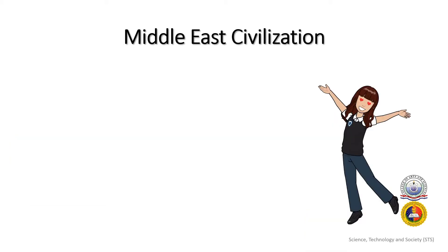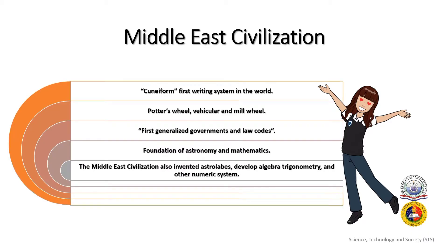The Arabic contribution to science is monumentally significant. Arab scientists, writing in Arabic, made groundbreaking breakthroughs which broadened mankind's comprehension of the natural world. Cuneiform is the first writing system in the world. The potter's wheel was invented in Mesopotamia, also the vehicular wheel. The first governments and law codes created major changes to countries all over the world. Arabic scientific inquiry flourished into major discoveries in the fields of mathematics, physics, astronomy, chemistry, medicine, and optics.